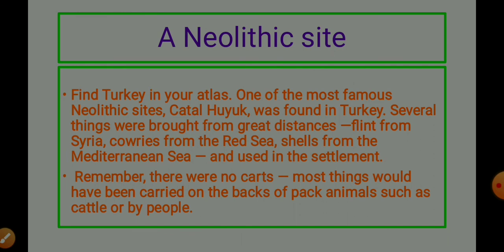The next topic is a Neolithic site. Neolithic means new stone age, as I have already told you. Find Turkey in your atlas. One of the most famous Neolithic sites, Çatalhöyük, was found in Turkey. Several things were brought from great distances — flint from Syria, cowries from the Red Sea, shells from the Mediterranean Sea — and used in the settlement. Remember, there were no carts. Most things would have been carried on the backs of pack animals such as cattle, or by people on their backs.